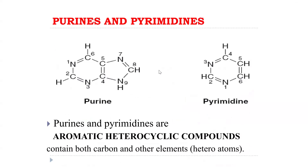Purines and pyrimidines are aromatic heterocyclic compounds containing both carbon and other elements — that is why they are called heteroatoms. Heteroatoms are atoms other than carbon and hydrogen.